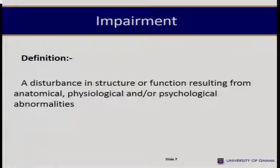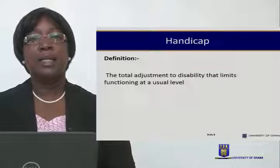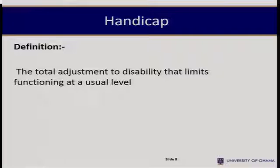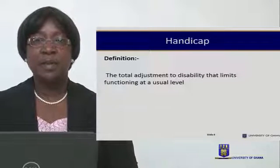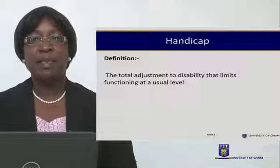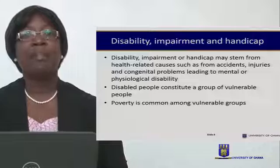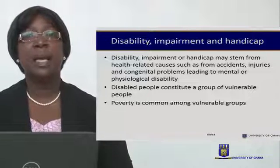Impairment is a disturbance in structure or function resulting from anatomical, physiological, and/or psychological abnormalities. Handicap is the total adjustment to disability that limits functioning at the usual level. You can now define these three terms — disability, impairment, and handicap. Now let's look at them more closely.